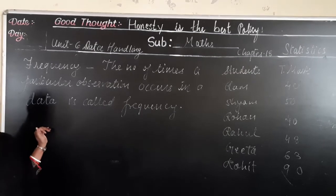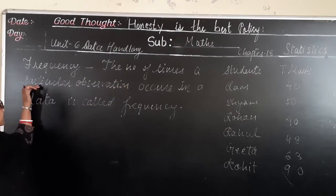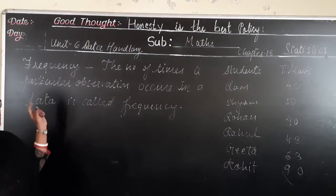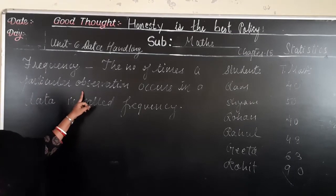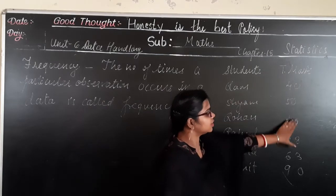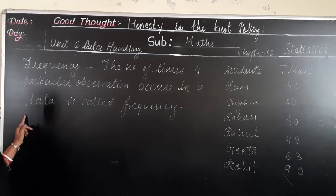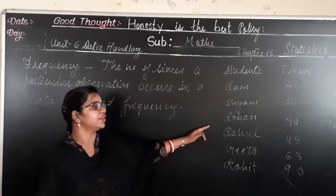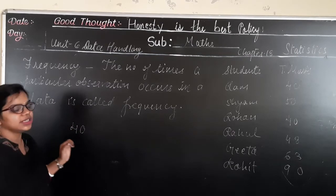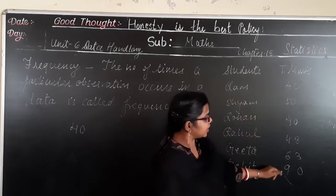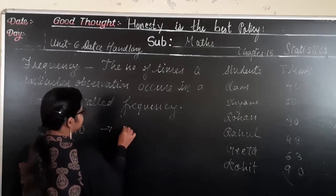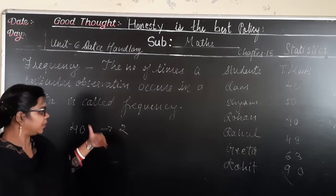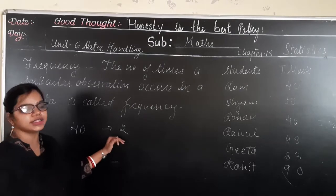Now the next topic is frequency. The number of times a particular observation occurs in a data is called its frequency. Suppose in the table, I have to find out the frequency of 40. So 40 is repeated how many times? 1 and 2 — so the frequency of 40 is 2. It is repeating 2 times, so the frequency of 40 is 2.